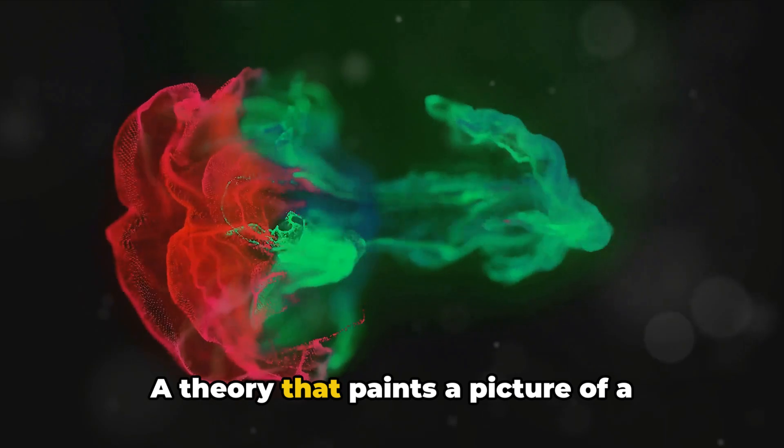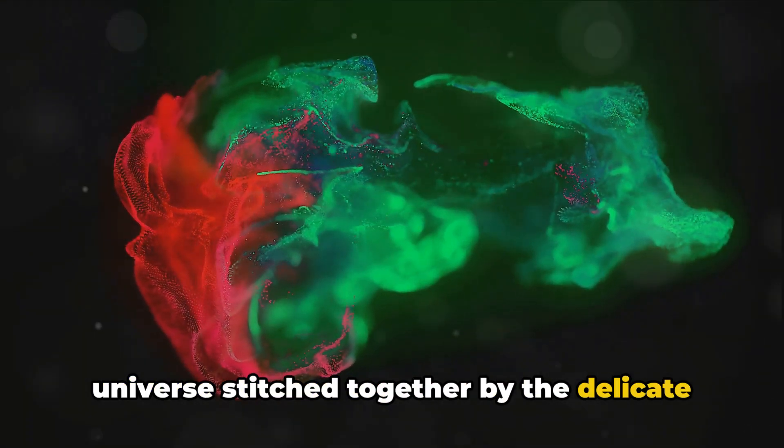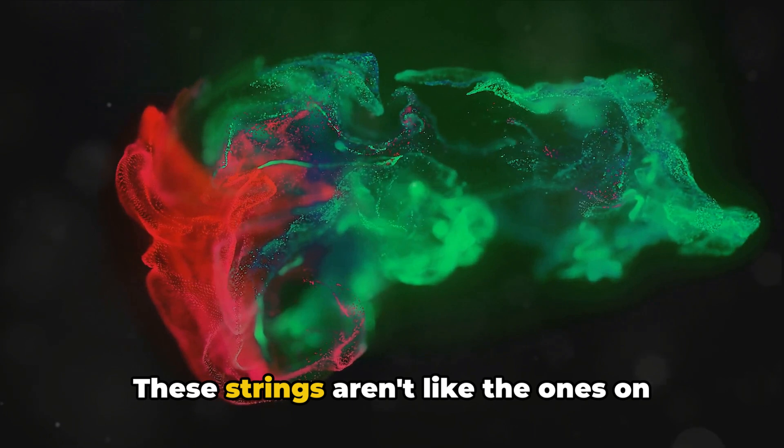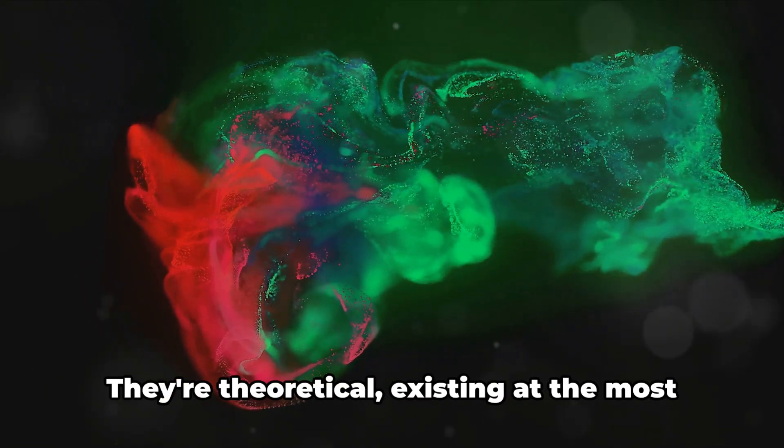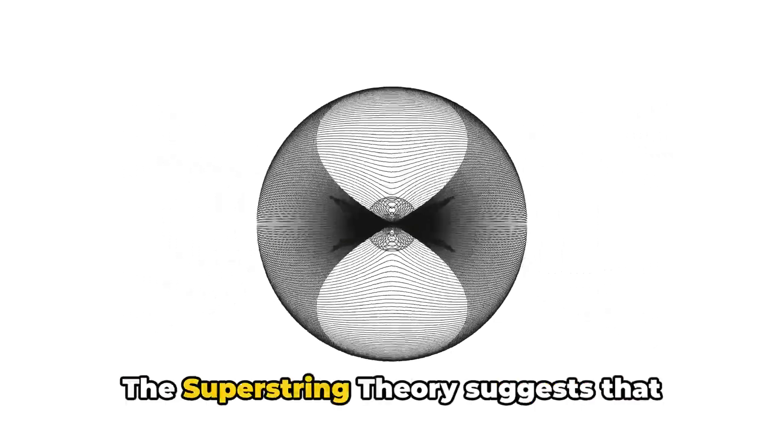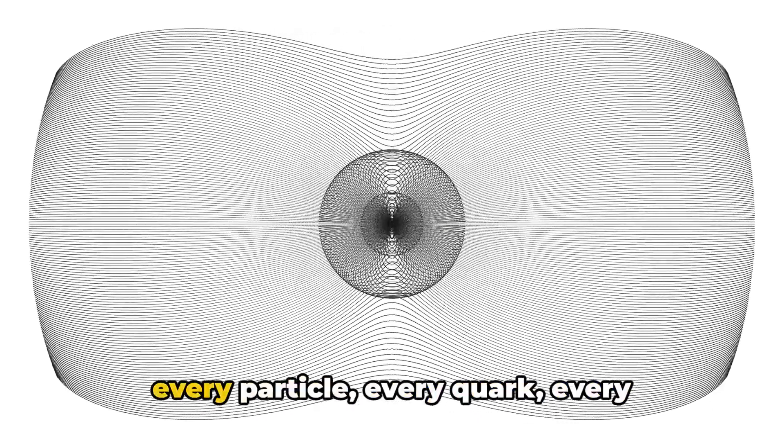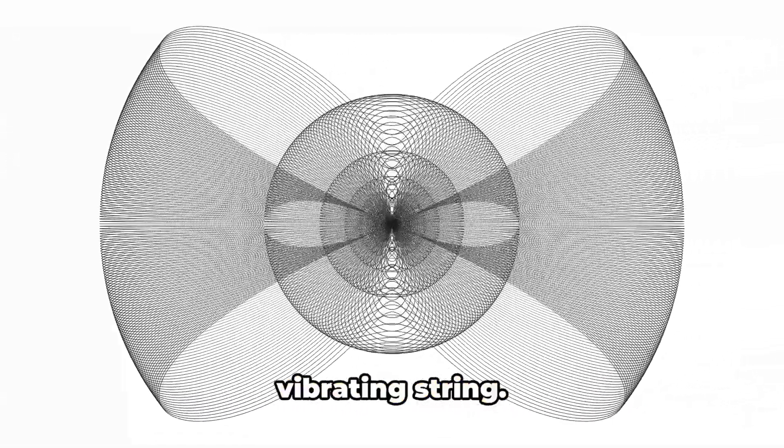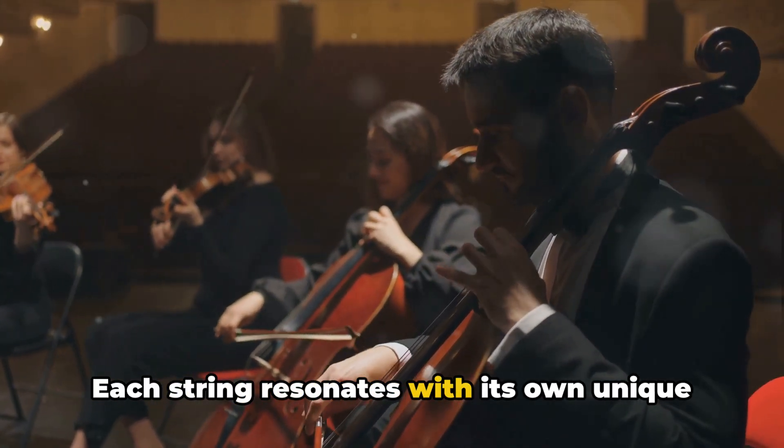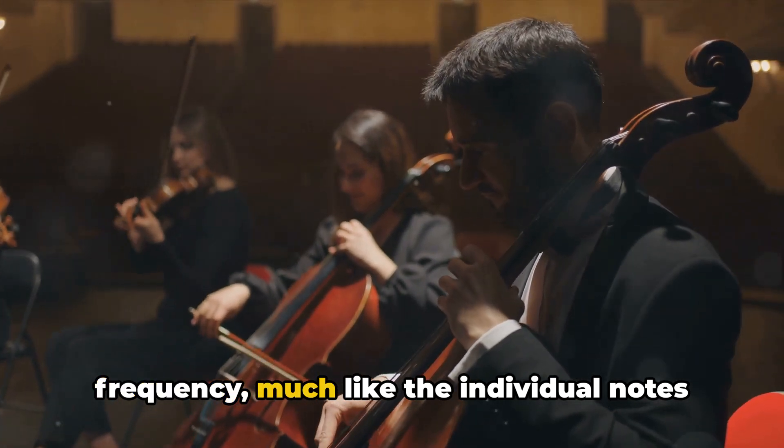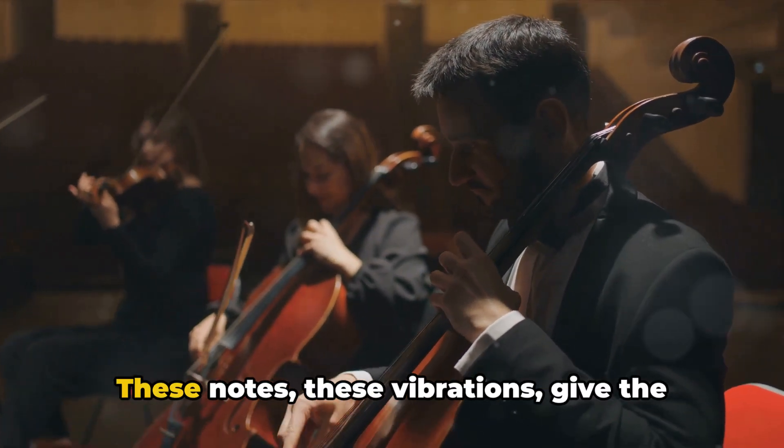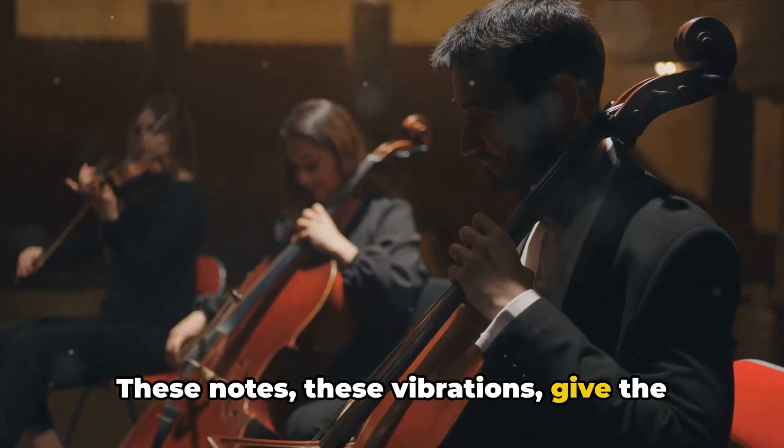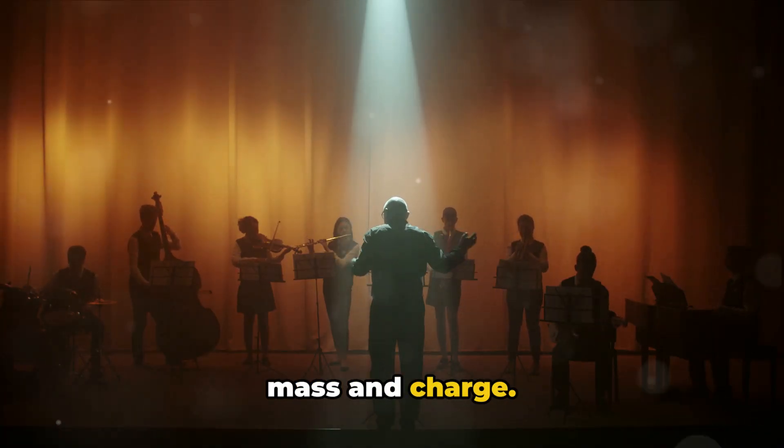At number three, we have the super string theory, a theory that paints a picture of a universe stitched together by the delicate threads of strings. These strings aren't like the ones on your guitar or your sneakers, they're theoretical, existing at the most fundamental level of reality. The super string theory suggests that every particle, every quark, every electron, every photon, is a tiny, vibrating string. Each string resonates with its own unique frequency, much like the individual notes played on a violin. These notes, these vibrations, give the particles their unique properties, such as mass and charge.